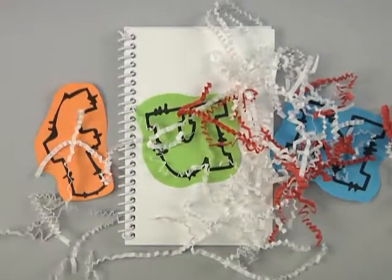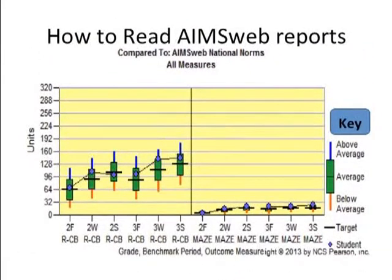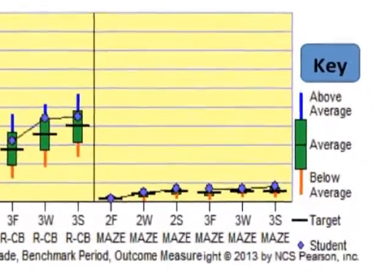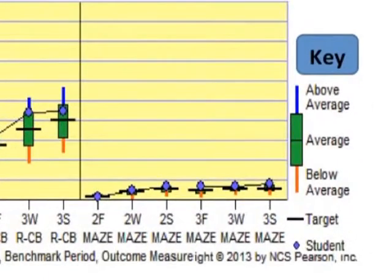With those words in mind, let's talk about how they help us understand how students are learning. The pathway report shows students' performance data for each administration of the benchmark assessment. Located on the right-hand side of the report is a key that will help us interpret the data.